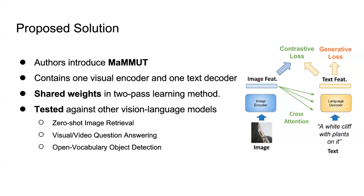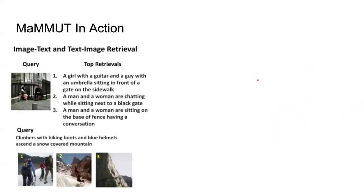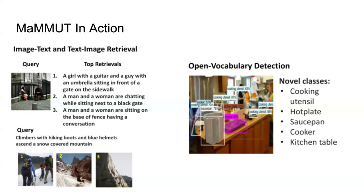The authors tested MaMMUT against other VLMs on tasks like zero-shot image retrieval, VQA, and open vocabulary object detection. Open vocabulary object detection is basically trying to do classification beyond your training set — for example, if your training set has a toy elephant but your test set has a toy crocodile, your goal is to generate a bounding box and detect it as a toy crocodile. You can see results here: image-to-text and text-to-image retrieval, open vocabulary detection with very accurate bounding boxes and labels, visual question answering, and video question answering.